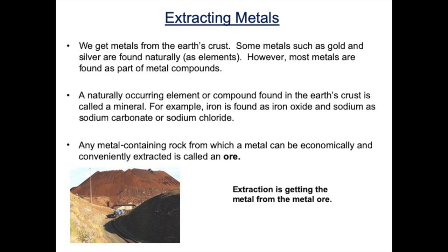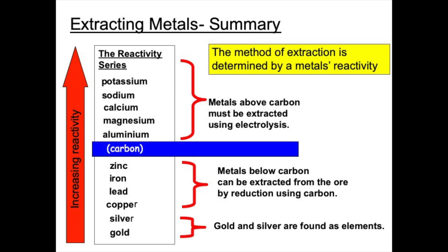In our last video we discussed the fact that some metals such as gold and silver are found as elements, while other metals are found as compounds. We said that a naturally occurring element or compound found in the earth's crust is called a mineral, and any metal-containing rock from which we can economically extract a metal is called an ore. Extraction is getting the metal from the metal ore. In our last video we also discussed the relationship between a metal's reactivity and the ease at which it can be extracted from its ore.